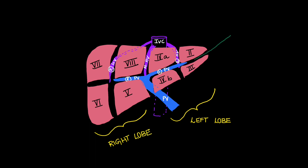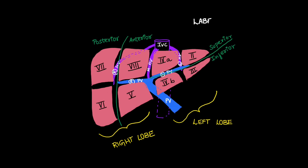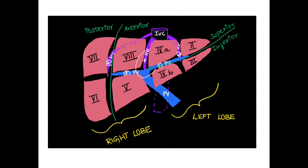Left lobe segments are divided as superior segments — that is 2 and 4a — and inferior segments — that is 3 and 4b. Right lobe segments are divided into anterior segments (5 and 8) and posterior segments (6 and 7), with clockwise labeling applied. You can save this image for reference.